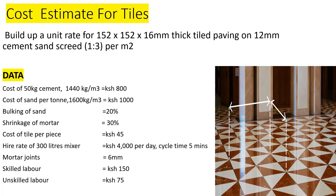We are building a unit rate for 152 × 152 × 16 mm thick tiled paving on a 12 mm cement-sand screed of ratio 1:3, per square meter. The data given: cost of 50 kg cement is 1,440 kg/m³ at 800; cost of sand is 1,600 kg/m³ at 1,000 per tonne; bulking of sand is 20%; shrinkage of mortar is 30%; cost of tiles is 45 each.